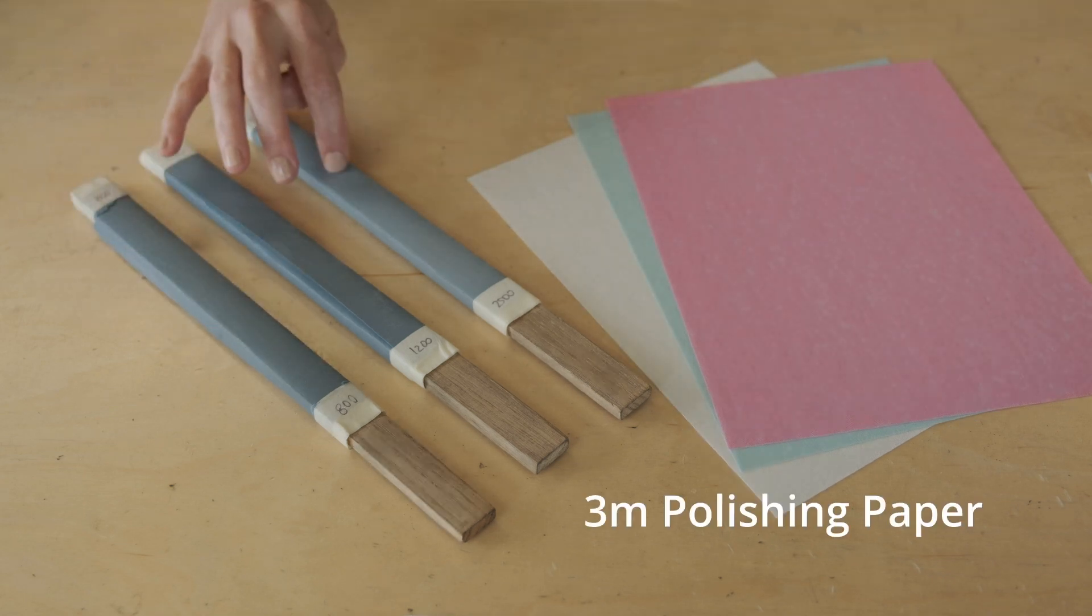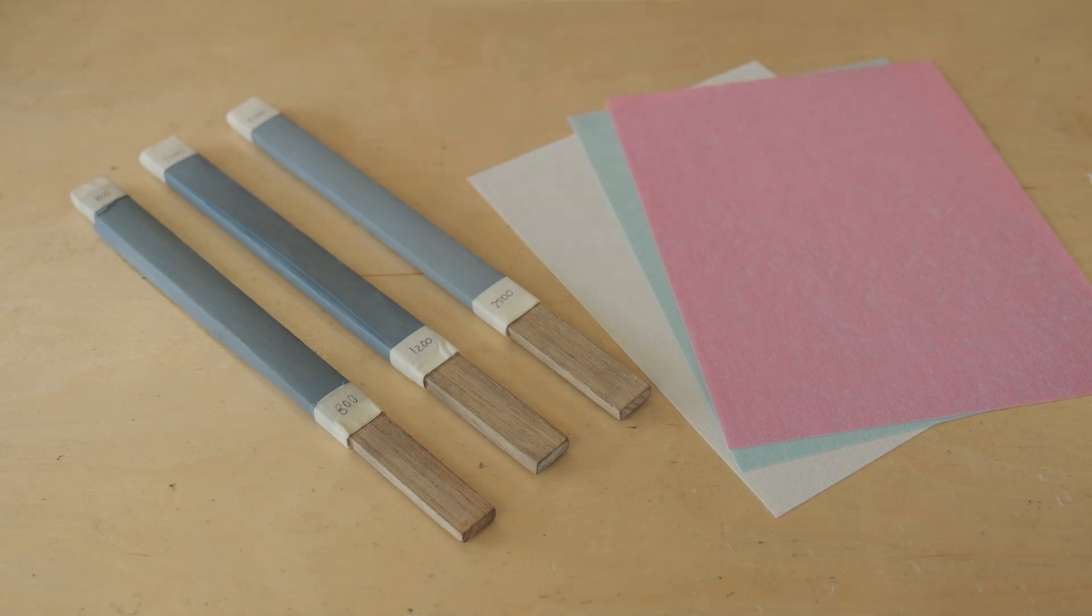We can then use 4000, 6000, and 8000 grit to take our pieces up to a really nice high shine.